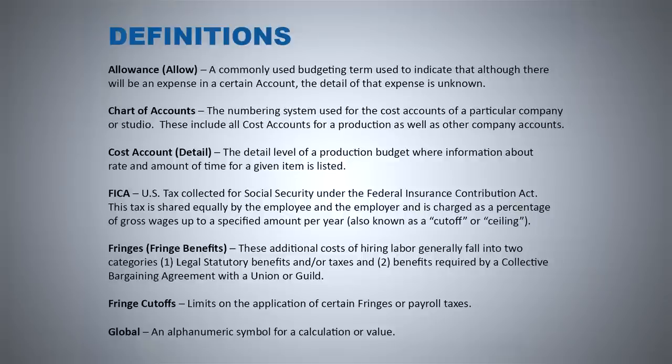A global is an alphanumeric symbol for a calculation or value. If you've ever typed SUM in Excel and it added up an entire column for you, that's essentially a global. The difference between doing that in Excel and doing it in Movie Magic Budgeting is we're actually going to build those globals ourselves here in the program. Those are the key terms I'll be using throughout this training, and you can rewind back if you have a question.